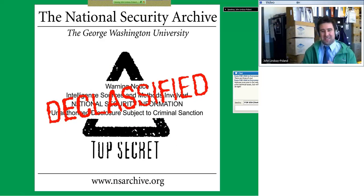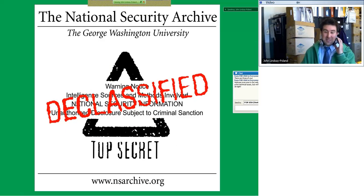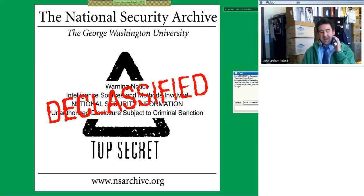My name is Nate Jones and I'm the Freedom of Information Act coordinator at the National Security Archive. What that means is that I oversee all of the thousands, tens of thousands of outgoing and ingoing Freedom of Information Act requests and appeals that we do. Today I'm going to talk briefly about the National Security Archive and briefly about the history of FOIA, and spend a big chunk talking about how to file effective Freedom of Information Act requests. Freedom of Information Act requests, if you don't know, is abbreviated FOIA.